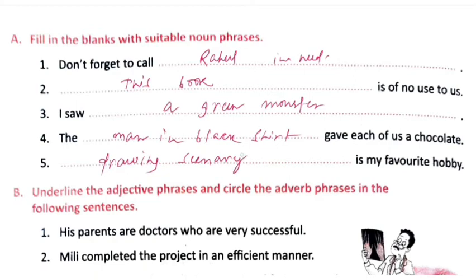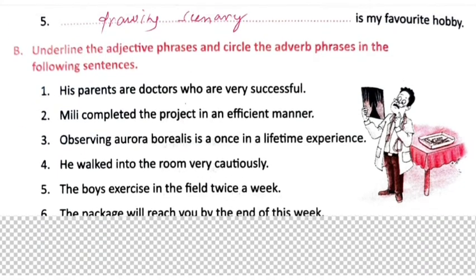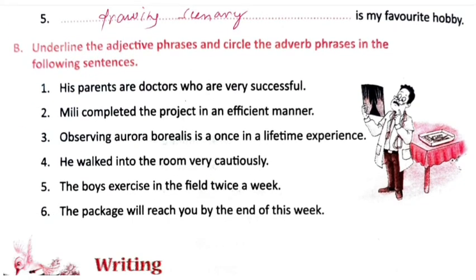'Drawing scenery is my favorite hobby.' Now you have to underline the adjective phrase and circle the adverb phrase. First sentence: 'His parents are doctors who are very successful' — 'very successful' is the adjective phrase.